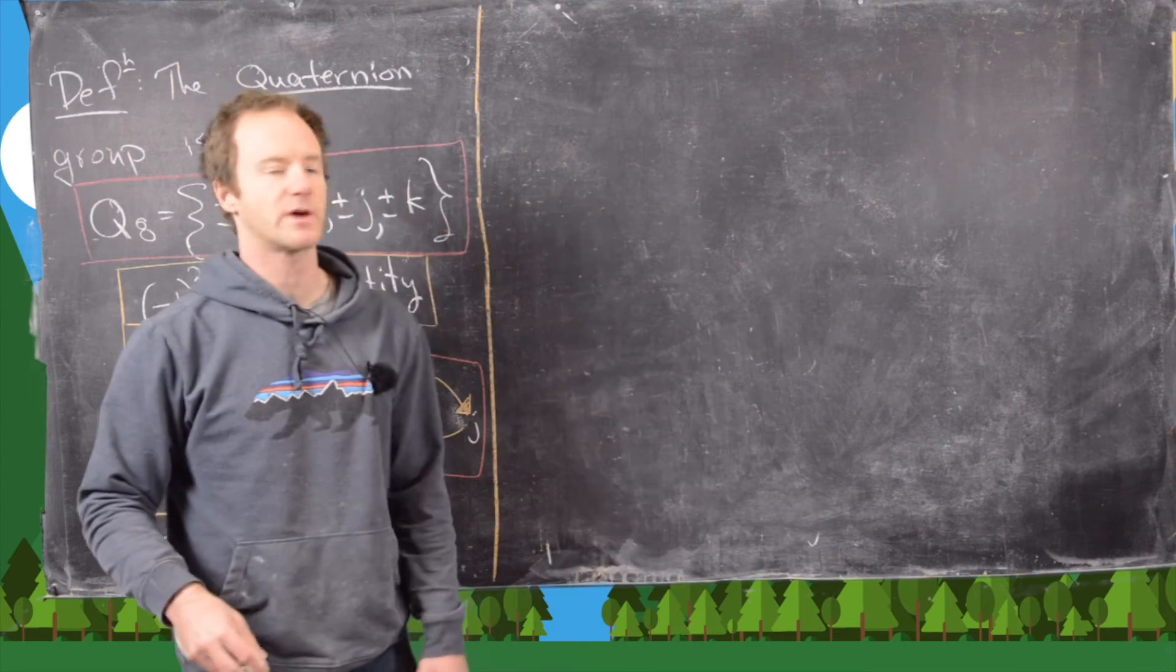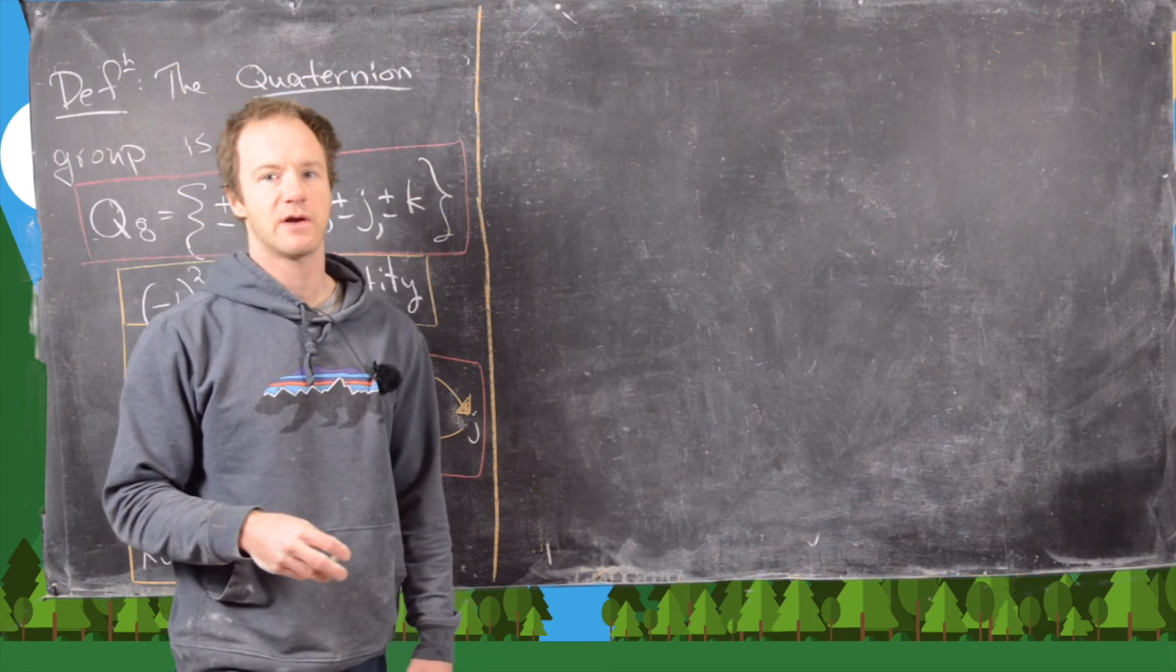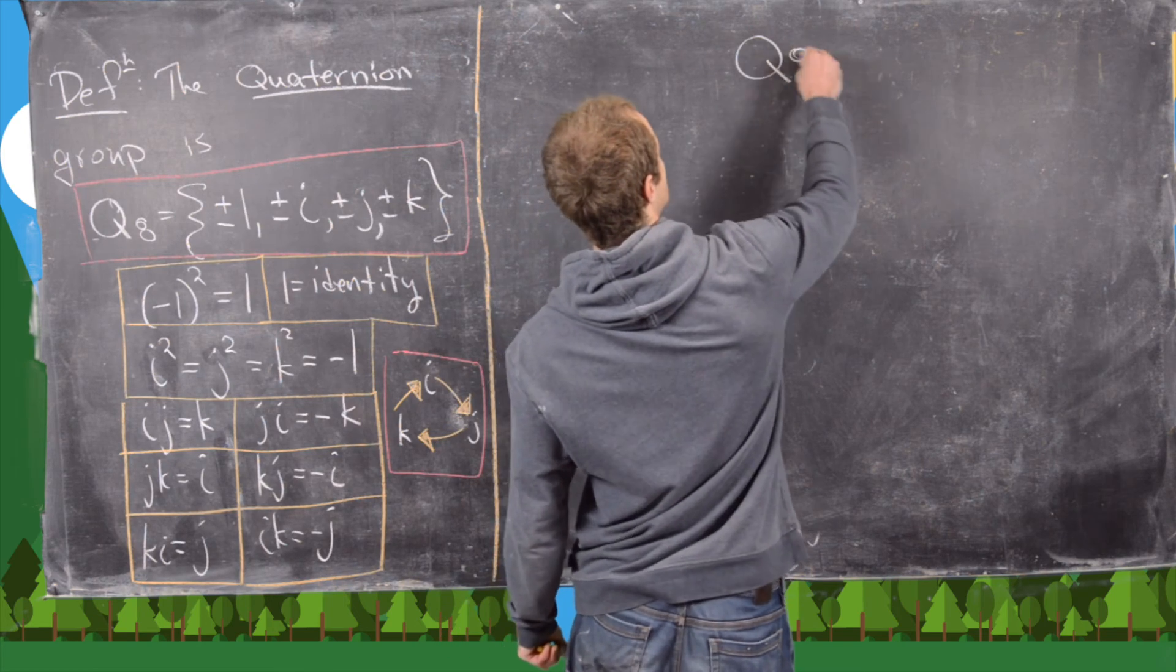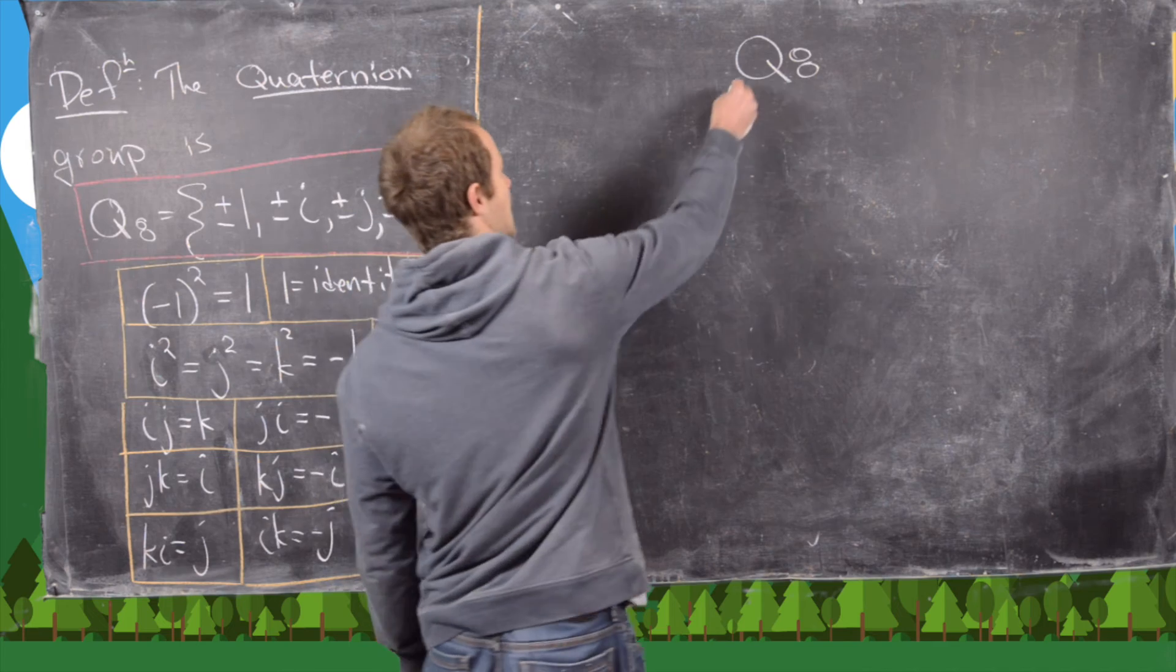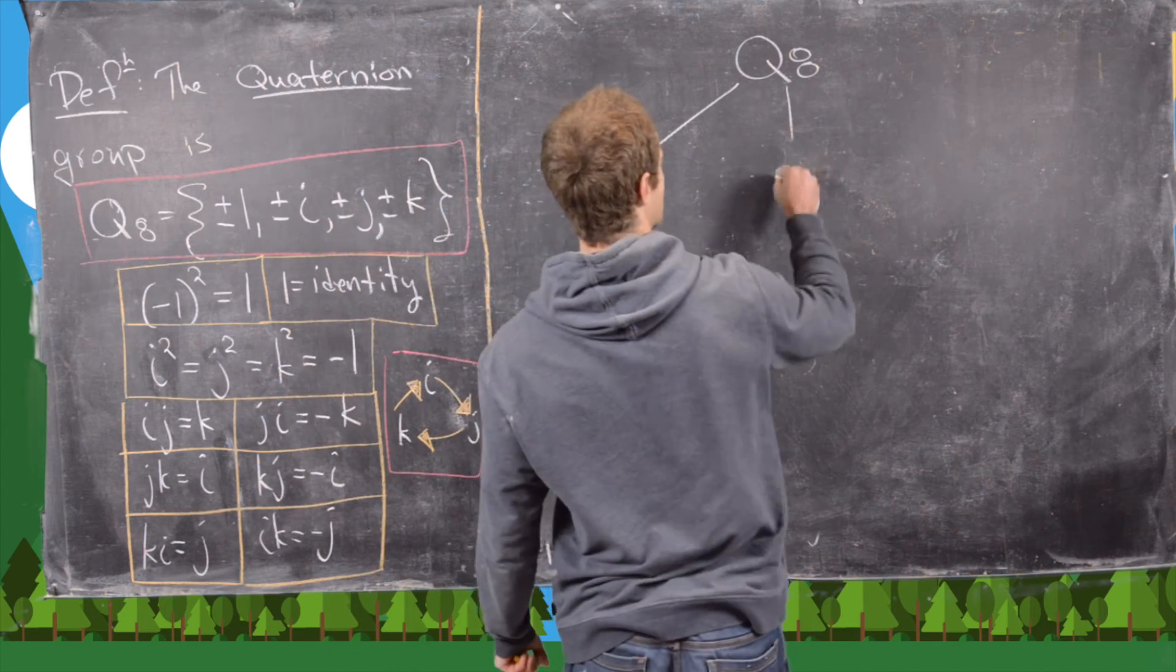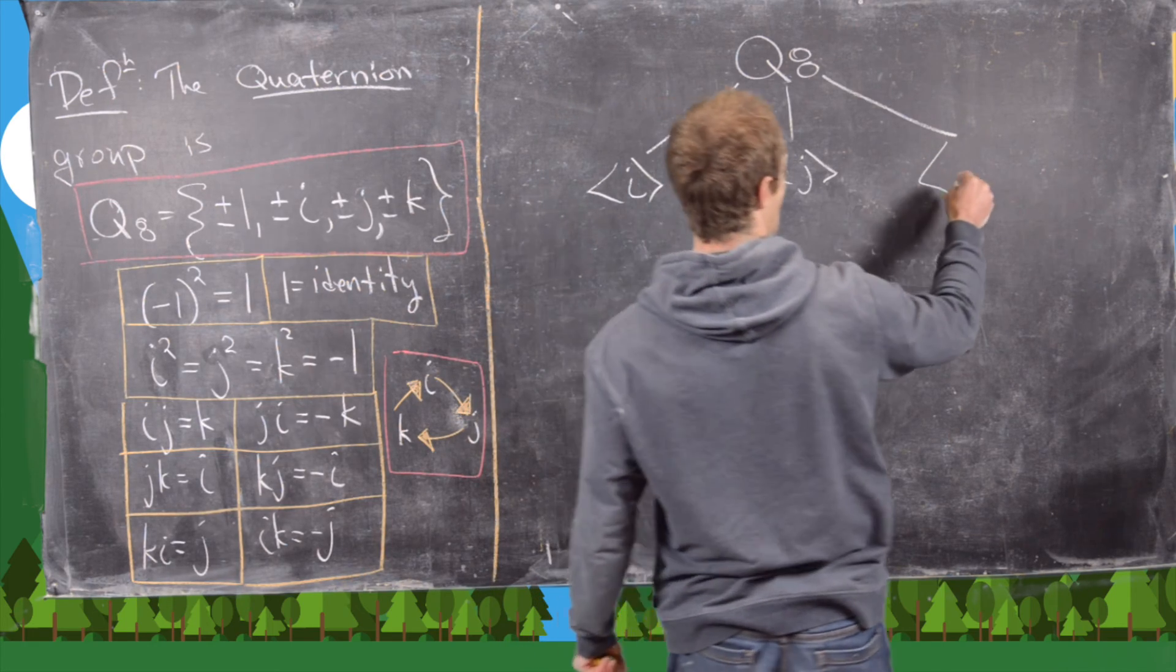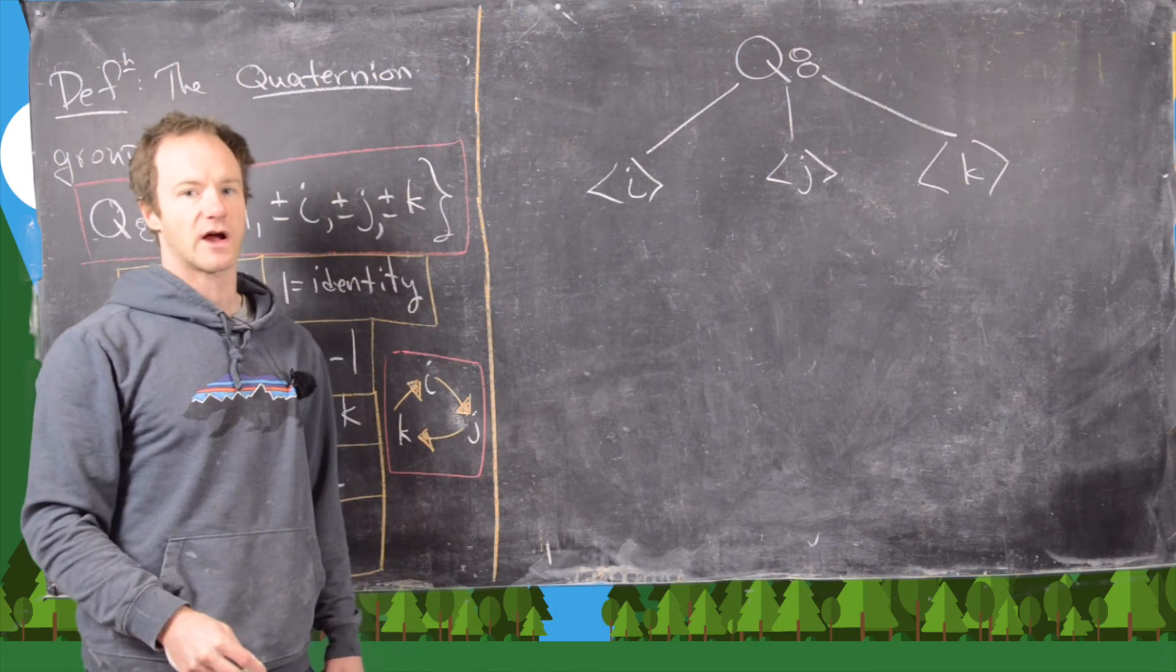Okay, so on the last board, we argued that we had all of the subgroups of the quaternion group. Now I want to make a subgroup lattice of this group. So let's see, q8, so this is going to be the whole group up here, so this has 8 elements. So right below that will be all of the cyclic subgroups with 4 elements. So that's the cyclic subgroup generated by i, j, and k. Recall those each had 4 elements.